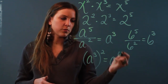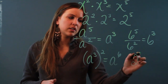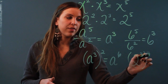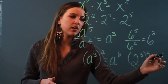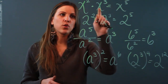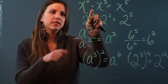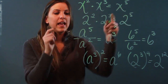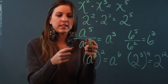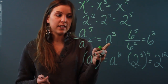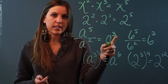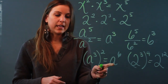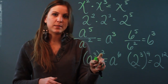The same works with numbers: if I had two to the third and raised that to the fourth, I get two to the twelfth. So to recap: if you're multiplying with the same base, keep the base and add the exponents. If you're dividing with the same base, keep it and subtract the exponents. If you're raising a power to another power, keep the base and multiply the exponents.